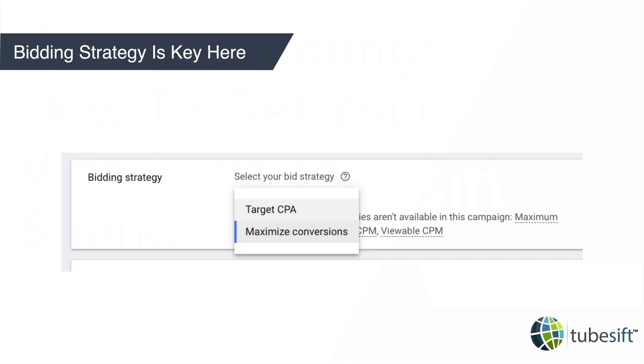The other one is maximize conversions. That one's a great place to start if you have no conversions through your pixel at all yet. You can go maximize conversions and Google will then just get as many conversions for your budget as possible. Over seven or so days, Google is going to learn with these different goals and it's going to try and make sure that it gets you the most conversions for your dollar amount.